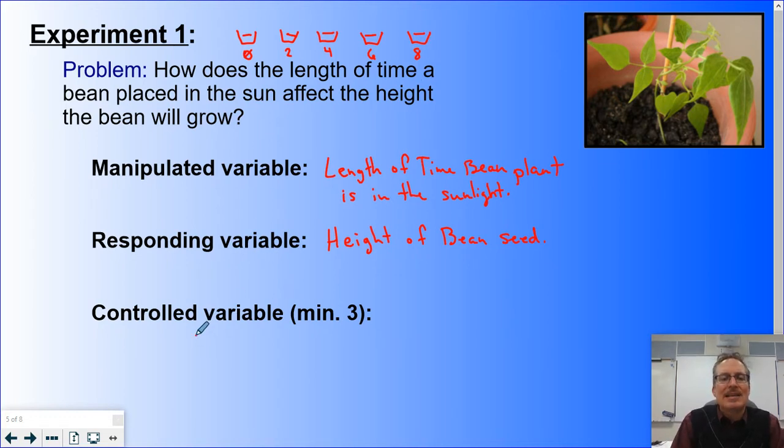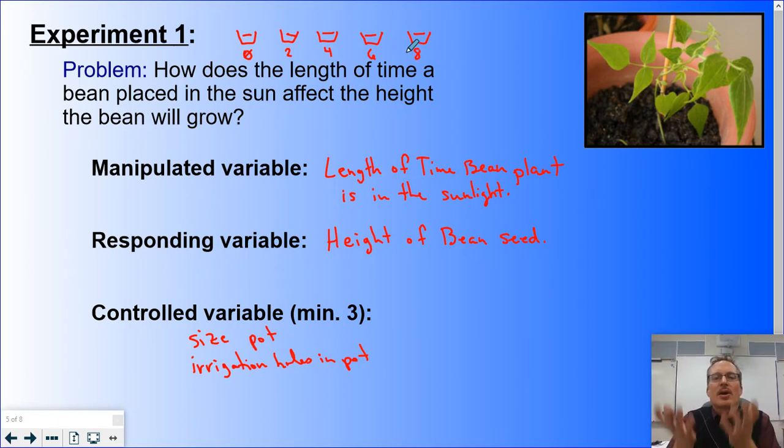Some controlled variables could be size of pot. Because if all the pots aren't exactly the same, then how do you know that the bean seed isn't growing taller because it's got more room to grow roots? Or maybe it's deeper. We could also go with irrigation holes. If the first two pots have no holes in the bottom and then the third pot has five holes in the bottom and the other two have only three holes, maybe a plant grows taller because some of the water leaks out or some of the water just is stored in there.